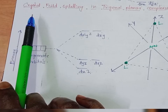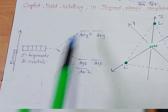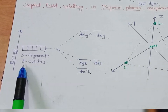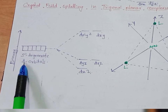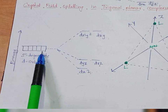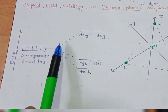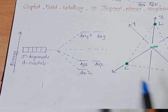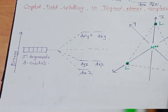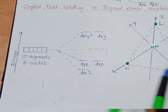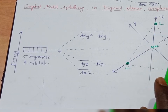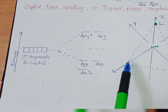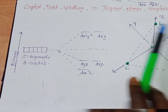Now, if we are going to discuss the crystal field splitting of d-orbitals in trigonal planar complexes: when the metal is in free state, all the five d-orbitals are in a degenerate state. From this degenerate state, the splitting of d-orbitals into different energy levels will take place. In the trigonal planar complex geometry, all three ligands are approaching along the xy axis.